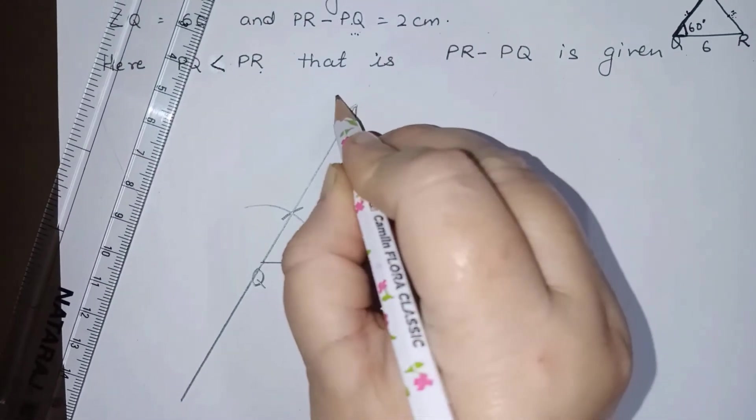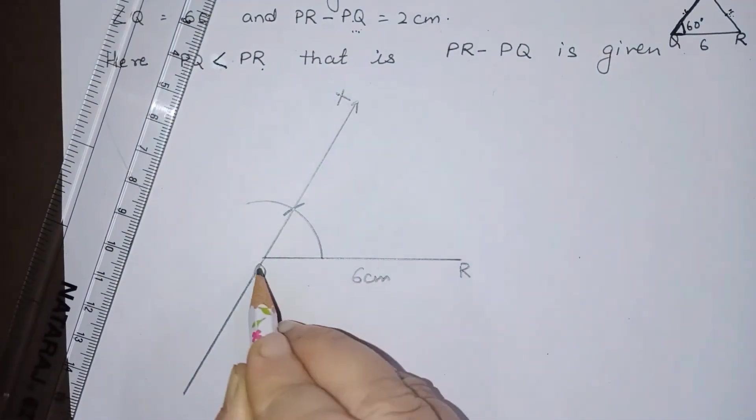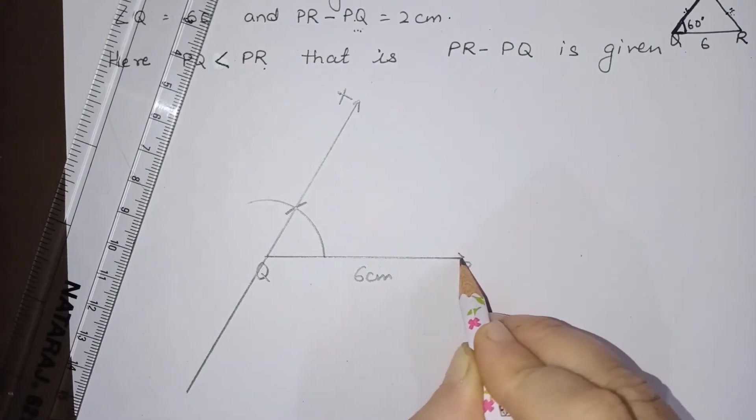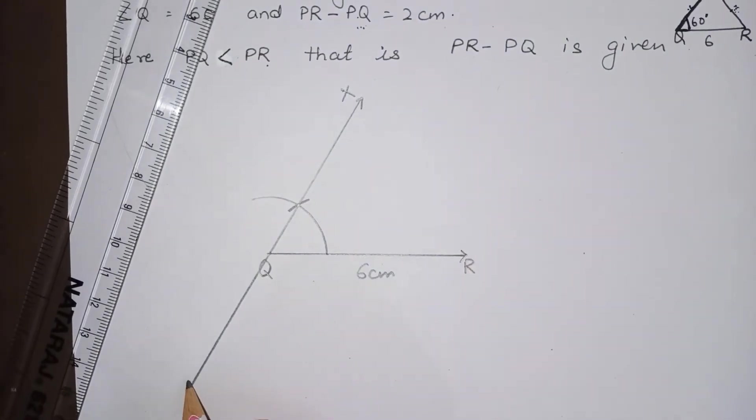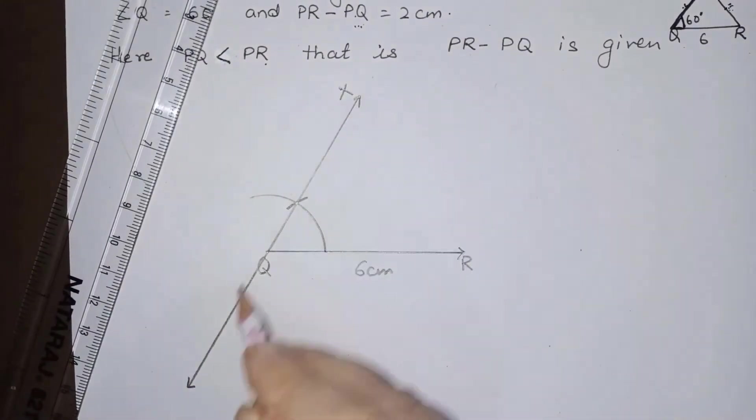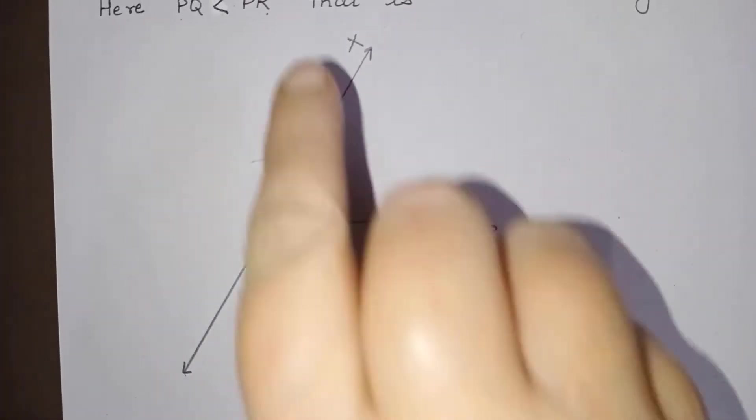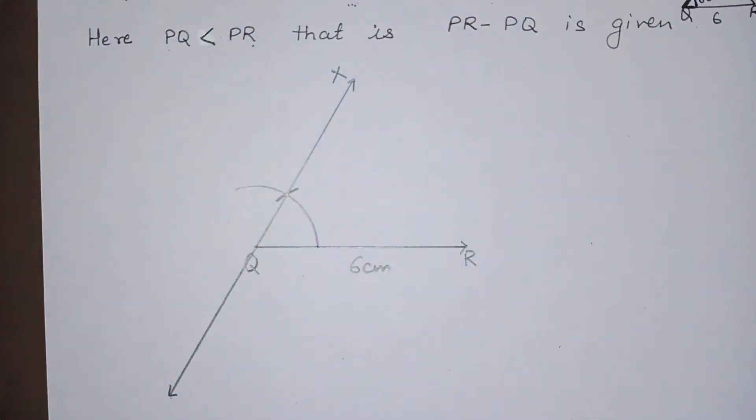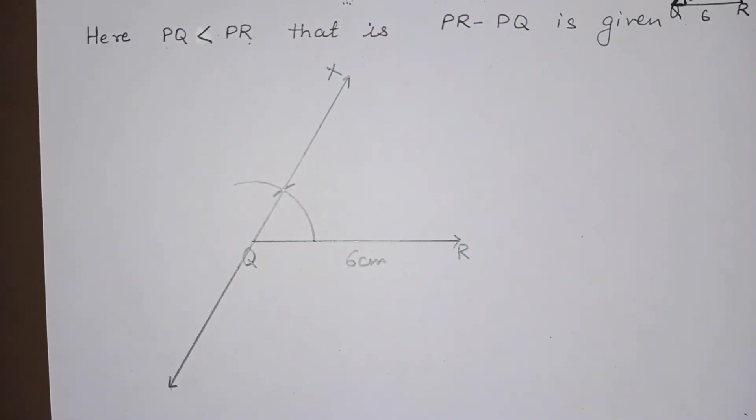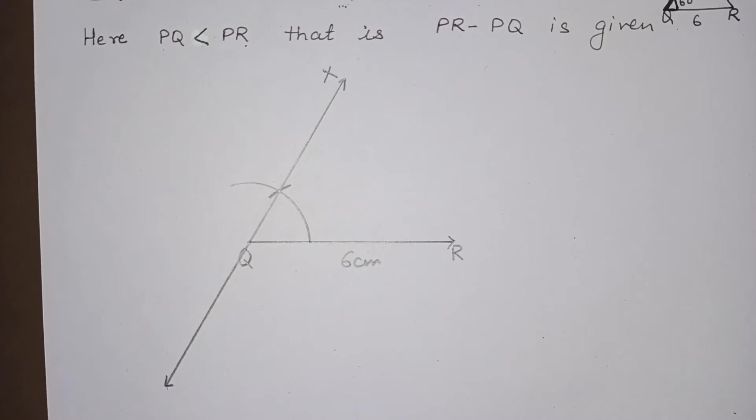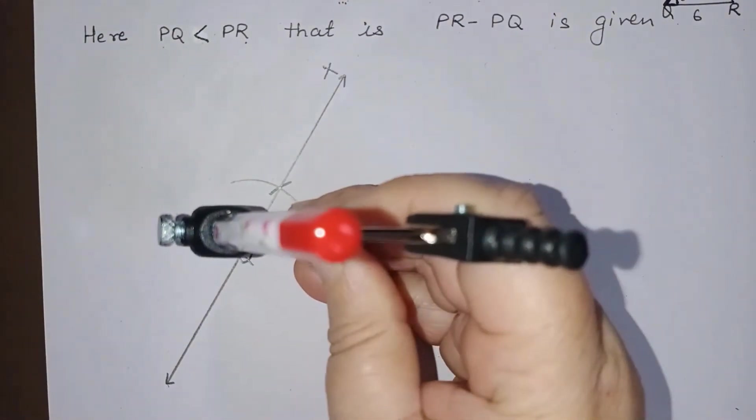See, we can call this as X, QR, and we will take this ray to other side also. Now what we have to do, now this difference PR minus PQ is given to be 2 centimeter.